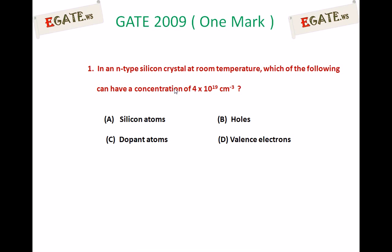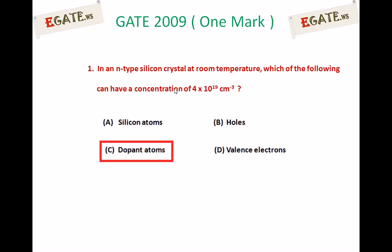In an N-type silicon crystal at room temperature, which of the following can have a concentration of 4×10¹⁹ per centimeter cube? The right answer for this question is dopant atoms — option C.